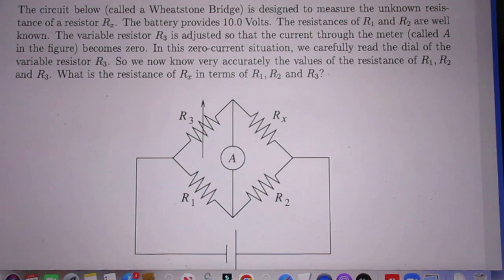In this zero current situation, we carefully read the dial of the variable resistor R3. So we now know very accurately the values of the resistance R1, R2, and R3.